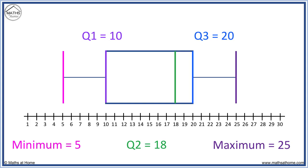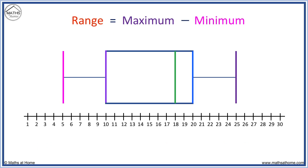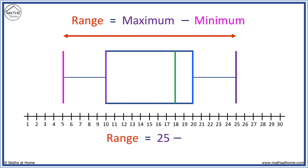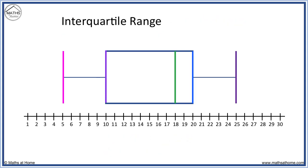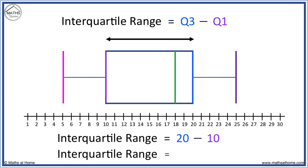Now we can use these numbers to find the range and the interquartile range. The range is equal to the maximum minus the minimum, and is also equal to the total length of the box plot from here to here. So the range equals 25 minus 5, which equals 20. The interquartile range is also the length of the box part of the box plot from here to here. In this example, the interquartile range equals 20 minus 10, which equals 10. The interquartile range is 10 and the length of the box is 10.